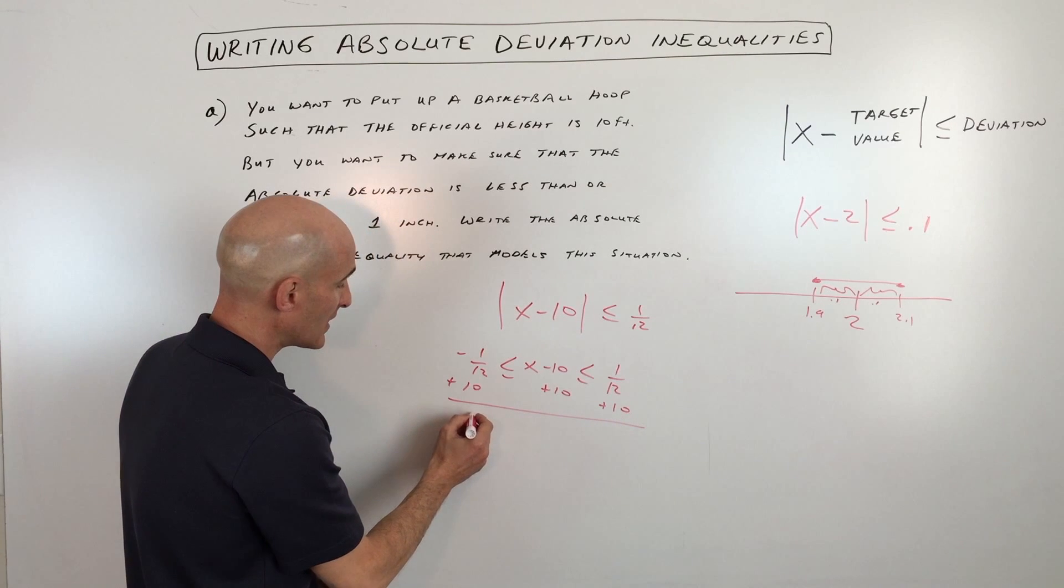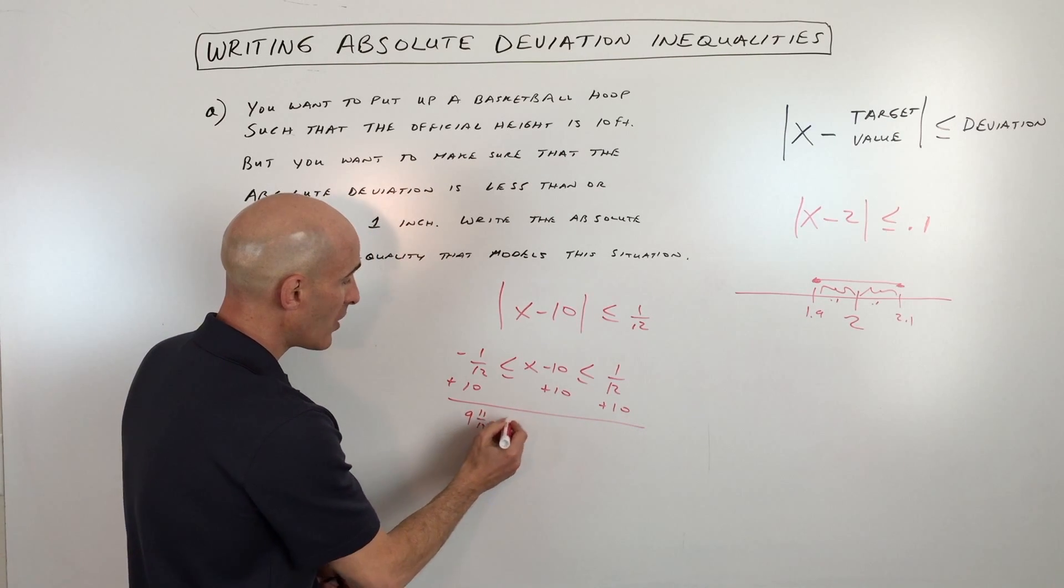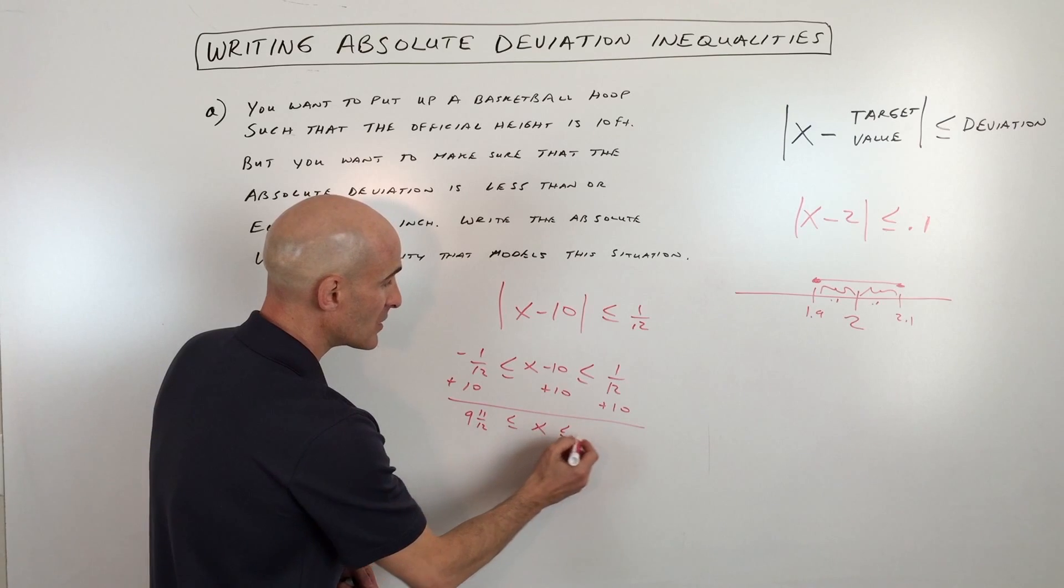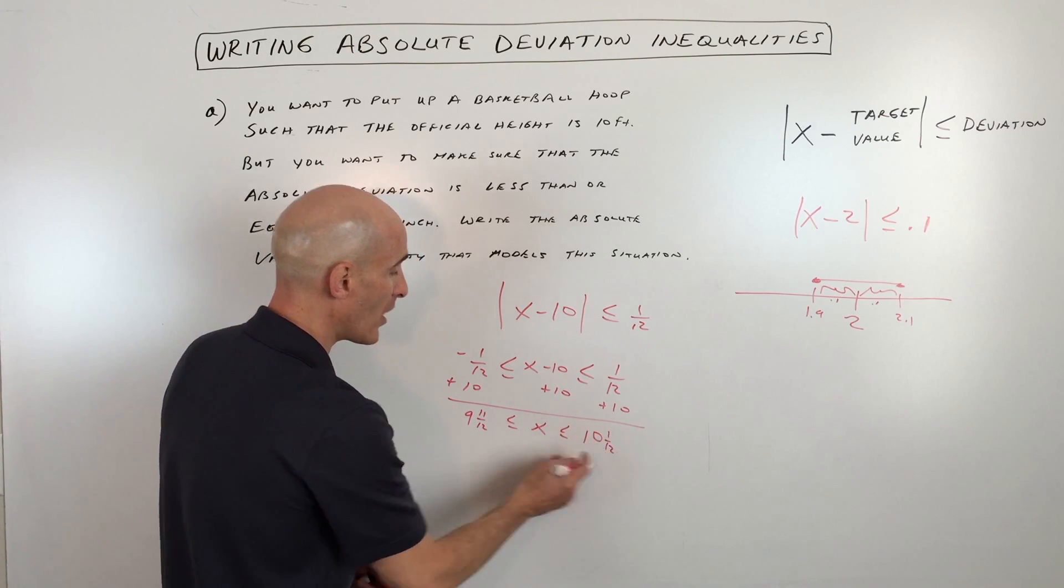And if we solve this, you can see we're getting 9 and 11 twelfths is less than or equal to X is less than or equal to 10 and one twelfth.